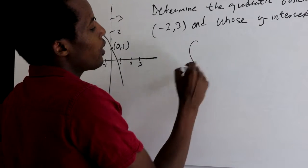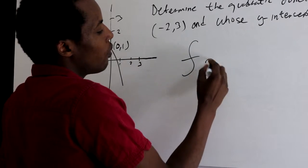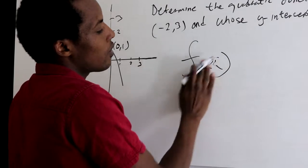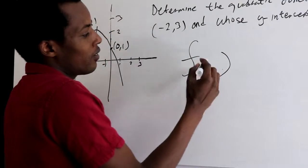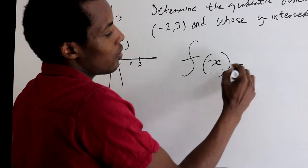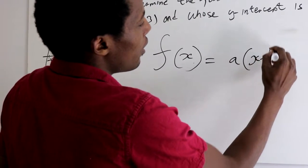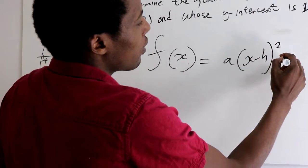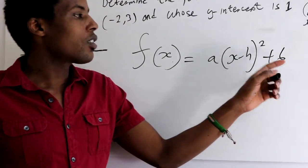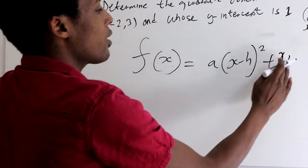So the formula that we can use is f of x. Sorry guys, I have really poor handwriting. So f of x is a quotient: A into x minus h squared plus k. K is a constant, plus k.